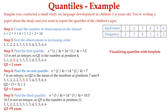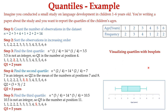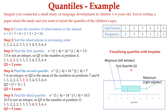After finding Q1, Q2, and Q3 values, we need to visualize the quartiles with a box plot. The box plot shows the age range from 0 to 8. The minimum value is 1, represented as the left whisker. The maximum value is 6, represented as the right whisker. The first quartile value Q1 is 2, the median Q2 is 3, and the third quartile Q3 is 5. Hope you are clear with this problem about quartiles.